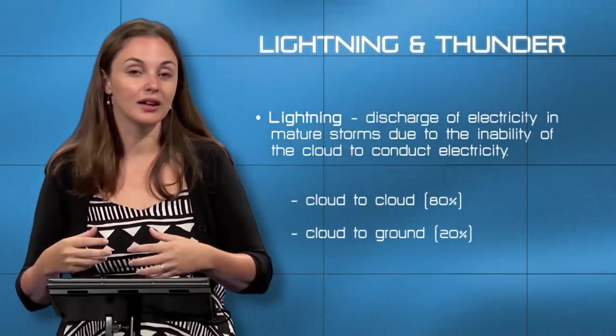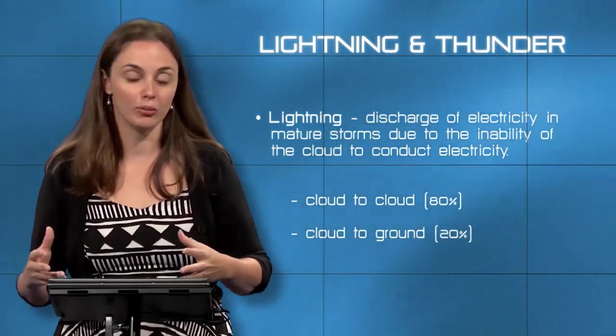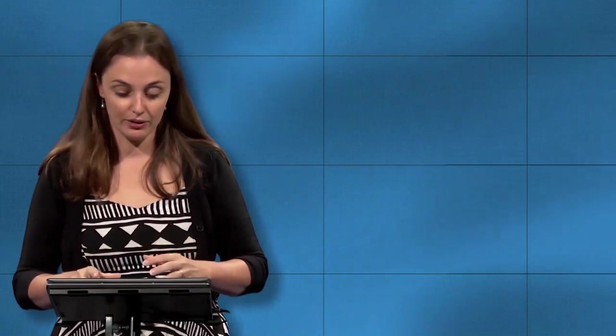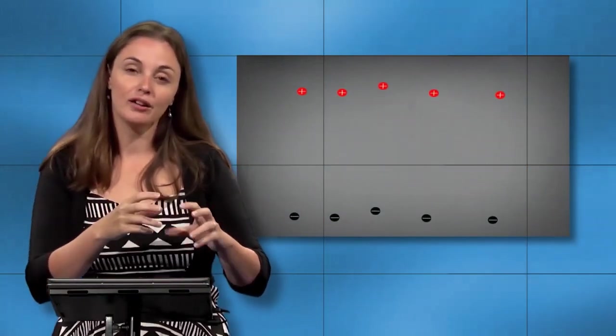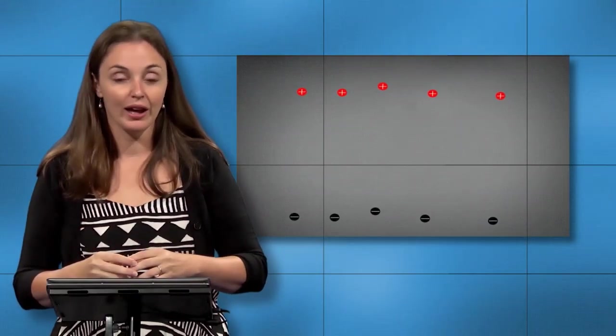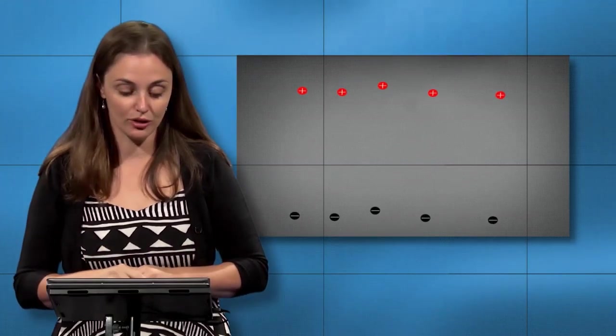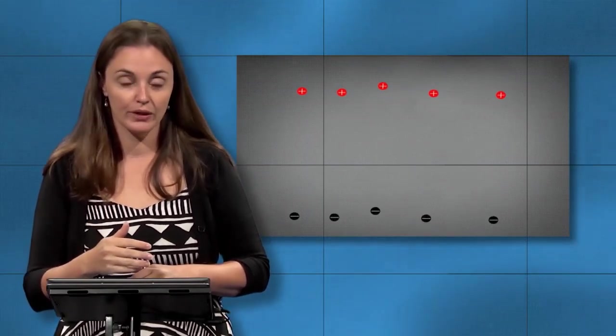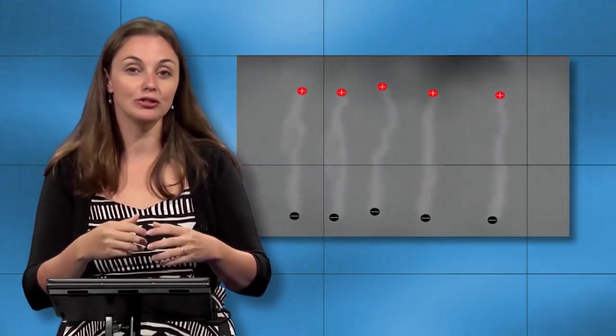Cloud-to-ground lightning does produce thunder you can hear from at least a few miles away. You typically want to think of lightning as coming down from the cloud, but that's not what's happening. The lower part of the cloud is more negatively charged and the upper part more positively charged. The ground surface, in response to the negatively charged lower cloud, actually becomes more positively charged to make up for that imbalance.